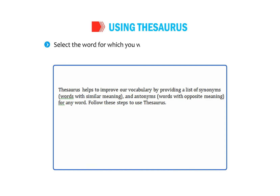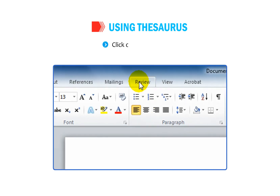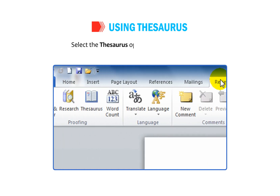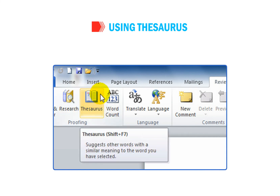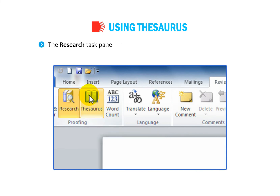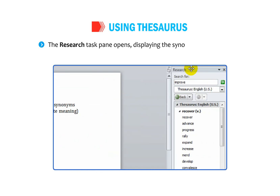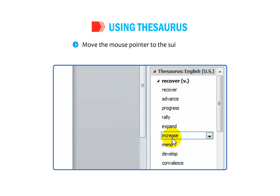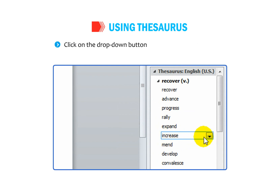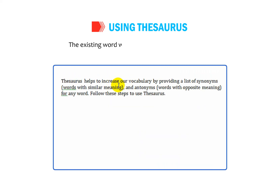Select the word for which you want to find synonyms or antonyms. Click on the Review tab and select the Thesaurus option in the Proofing group. The Research task pane opens displaying the synonyms and antonyms. Move the mouse pointer to the suitable word, click on the drop-down button, and select the Insert option. The existing word will be replaced with the new one.